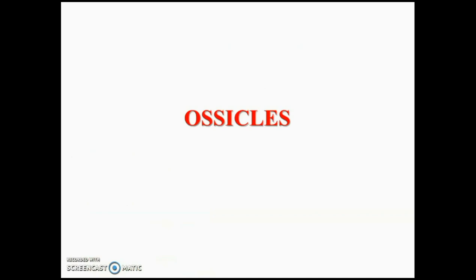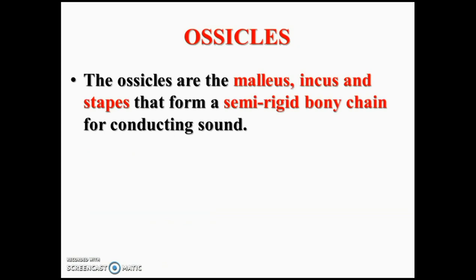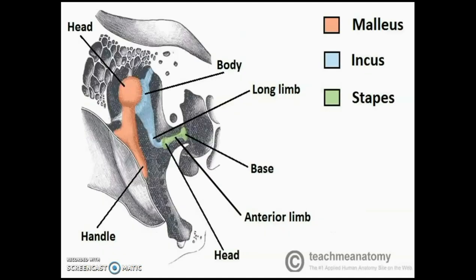Coming to the ossicles, as you know there are 3 ossicles — malleus, incus, and stapes — which form a semi-rigid bony chain for conduction of sound from the external ear to the internal ear. The malleus is the most lateral and attached to the tympanic membrane, whereas the stapes is medial and attached to the oval window of the internal ear.